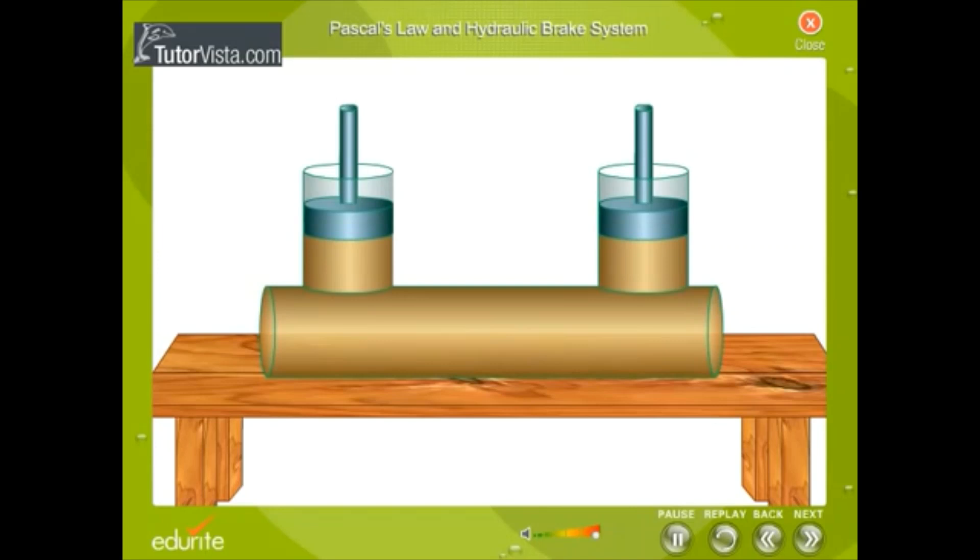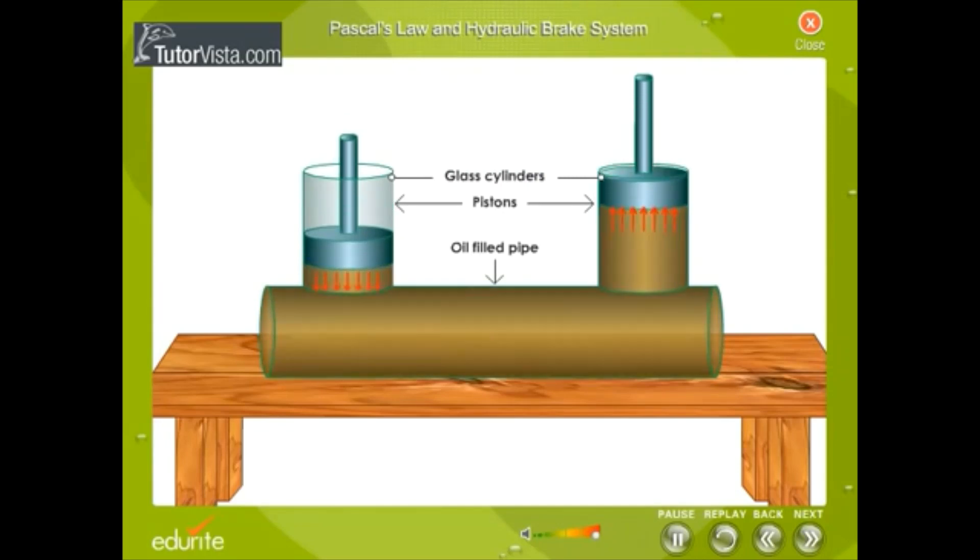In a Pascal's hydraulic system, two pistons are fitted into two glass cylinders filled with oil and connected to one another with an oil-filled pipe. If you apply a downward force on one of the pistons, then the force is transmitted to the second piston through the oil in the pipe. Since oil is incompressible, the efficiency is very good.